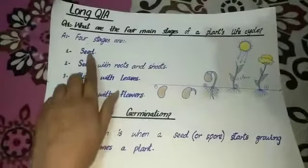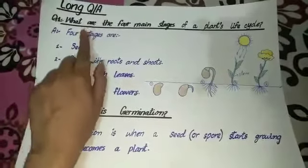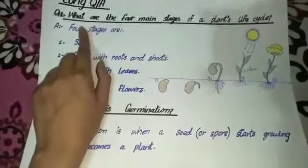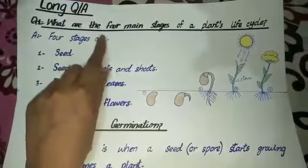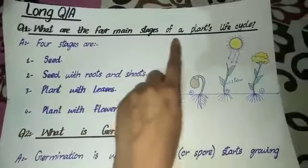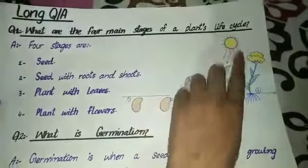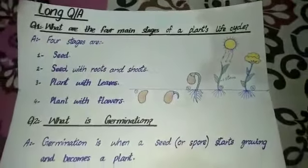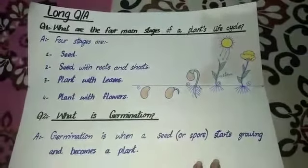Now I am going to explain the long question and answer of this chapter. The first question is: what are the four main stages of a plant's life cycle?